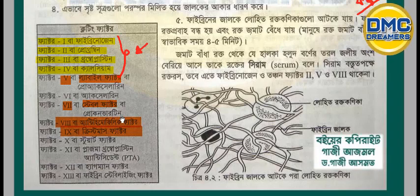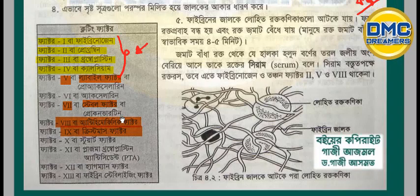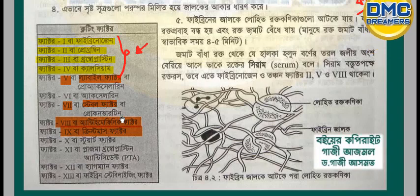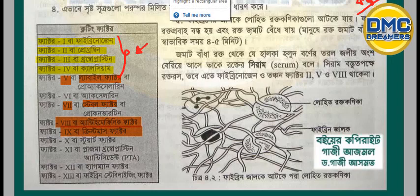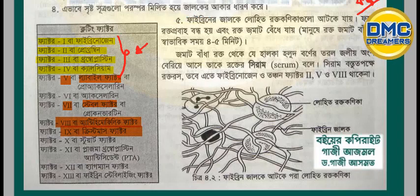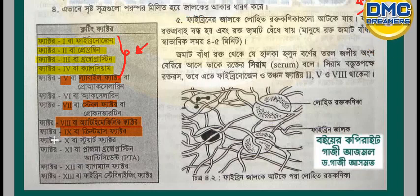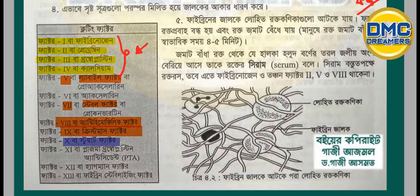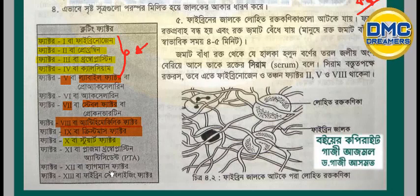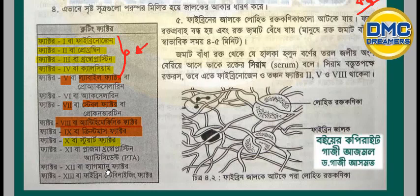Factor 9 is called the Christmas factor, and its deficiency causes Christmas disease, also known as hemophilia B. So factor 9 is associated with hemophilia B. Factor 12 is called the Hageman factor. We also have the Stuart factor (factor 10) and these are named after individuals.